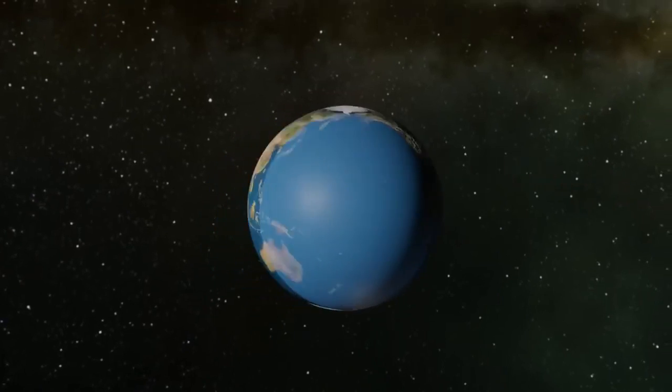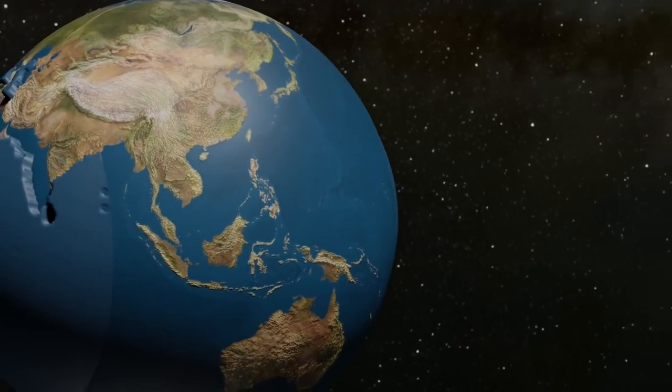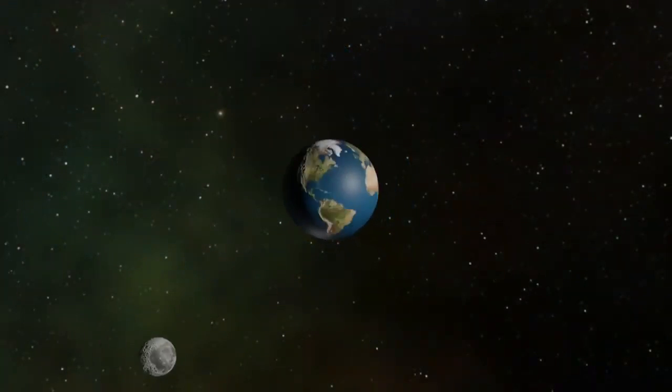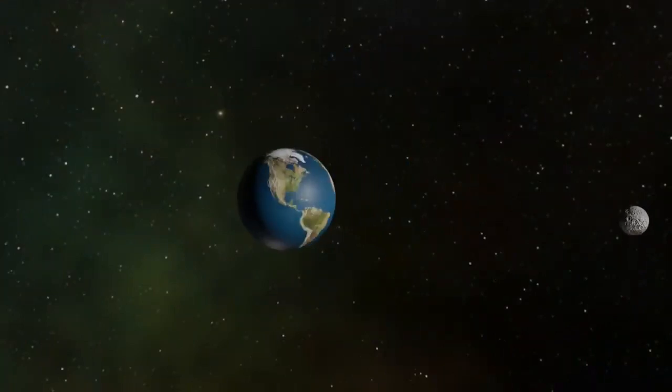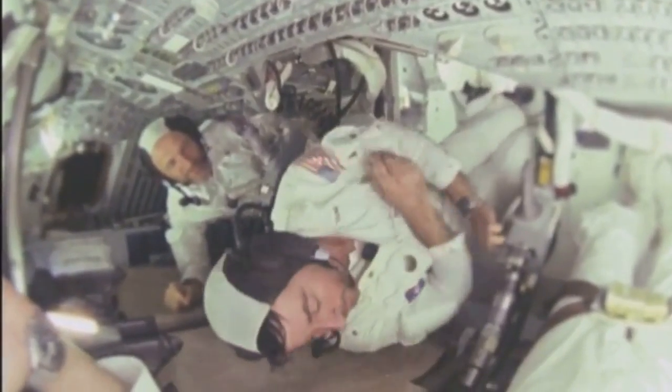Astronauts on the International Space Station are not in a no gravity environment. They are surrounded by the earth and the sun's immense gravity. More correctly, the astronauts are in a state of free fall.